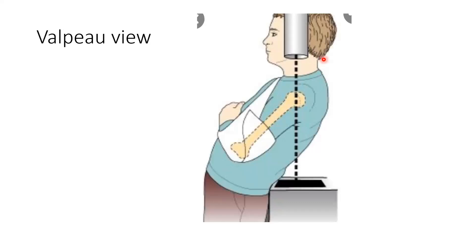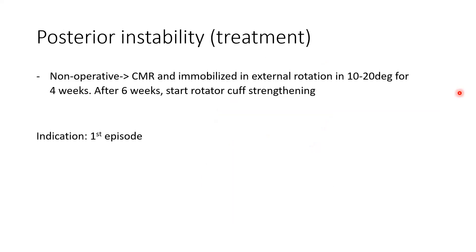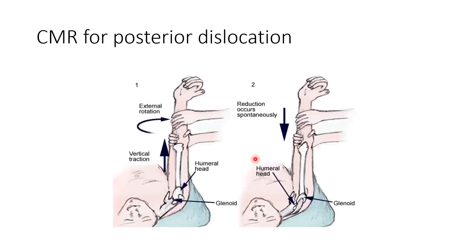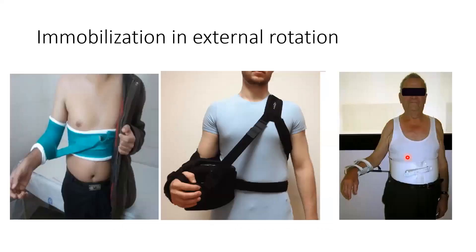Non-operative treatment for posterior instability: CMR and immobilization for about four weeks, then start physiotherapy after six weeks. Indicated for first episode. The CMR technique involves vertical traction and applying external rotation, which usually results in spontaneous reduction. Immobilize in external rotation — there are various methods to maintain external rotation position.